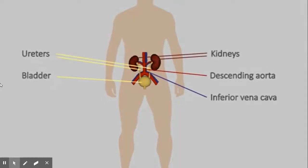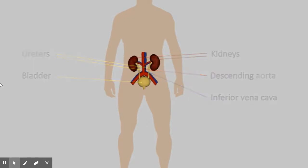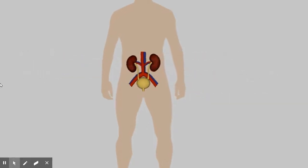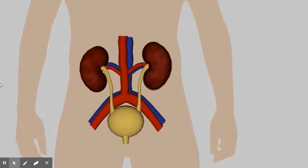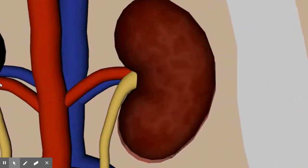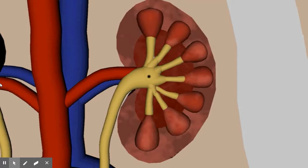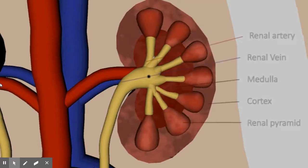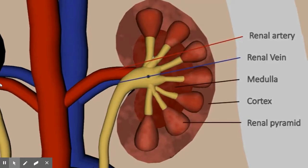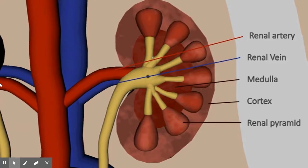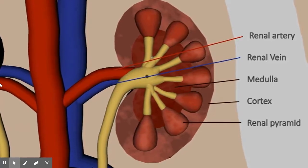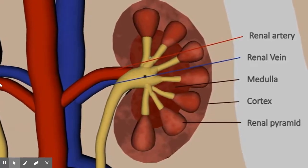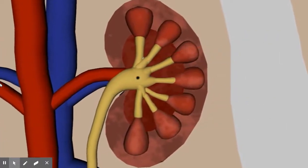The two kidneys are bean-shaped organs located close to the back. Each kidney receives blood flow from the renal artery which branches off the abdominal aorta — the main artery running down the center of the body. Blood passes from the kidney into the vena cava via the renal vein. The ureter allows the flow of urine from the kidney to the bladder. The functional mass of the kidney is divided into the cortex and medulla, which are made up of intertwined tubules called nephrons and collecting ducts, as well as blood vessels.